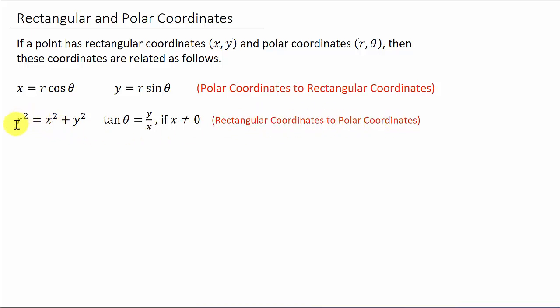So we'll use the fact that r squared equals x squared plus y squared, and tangent theta equals y over x. That's what we're going to use. Just remember, r and theta, that's the polar coordinate. x and y, that's the rectangular coordinate.